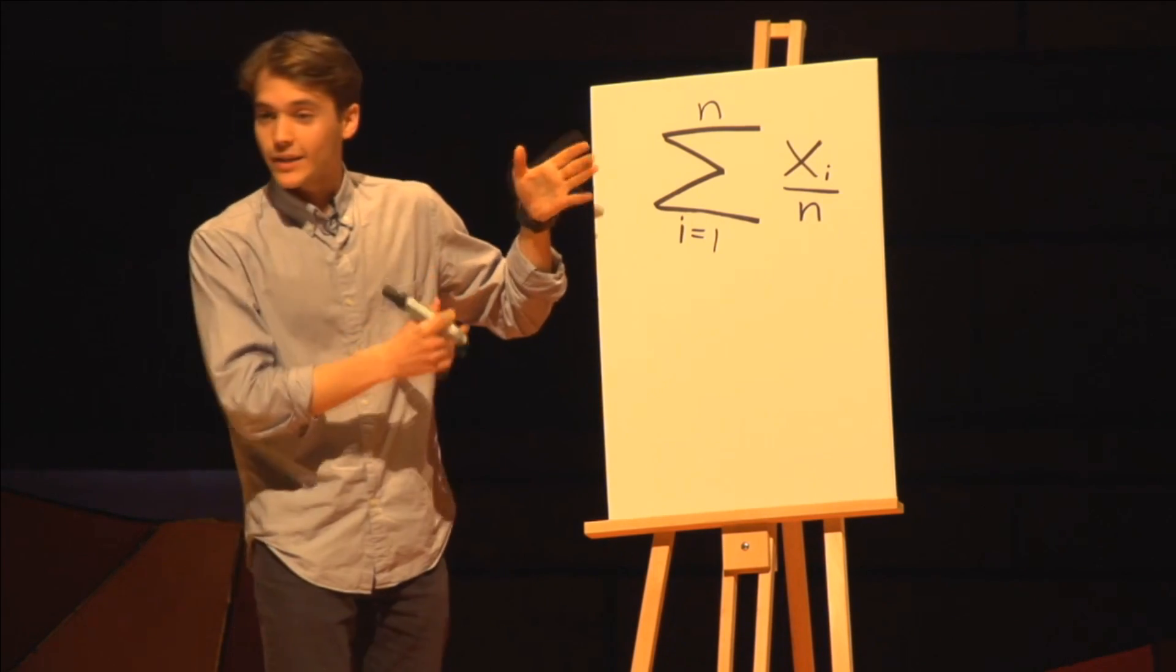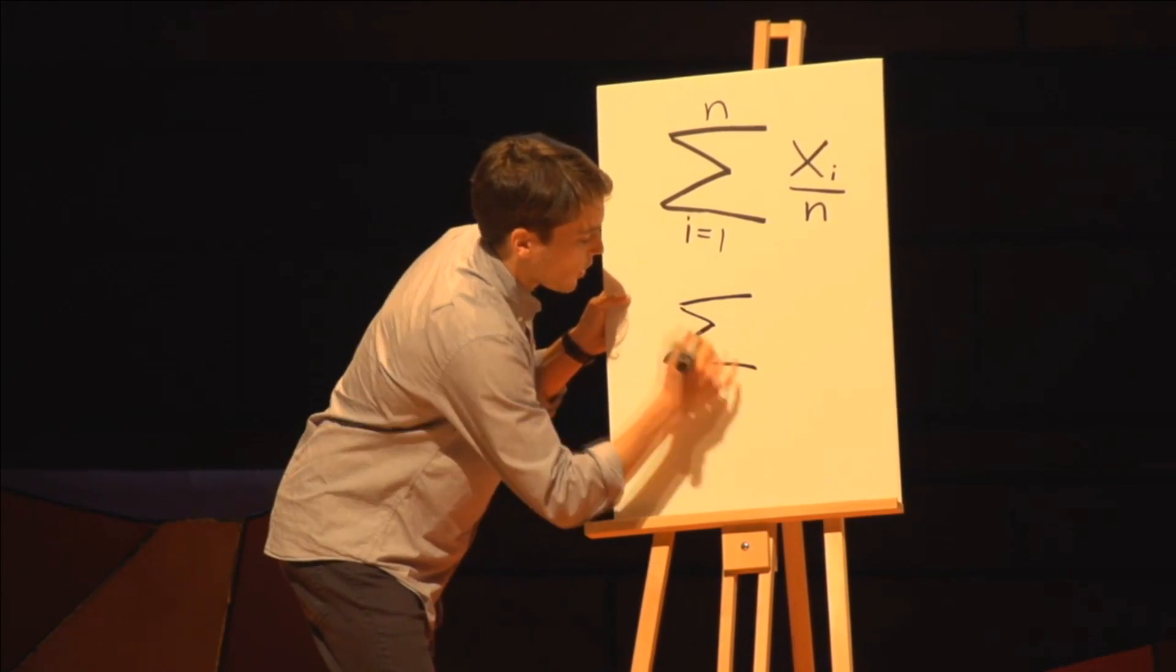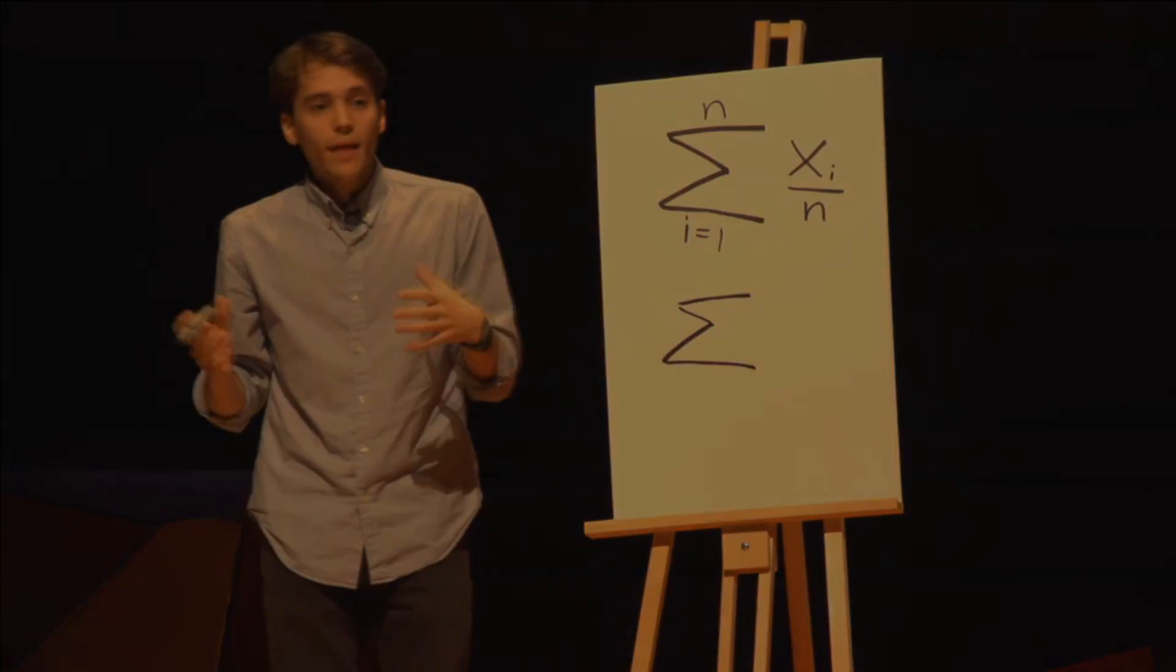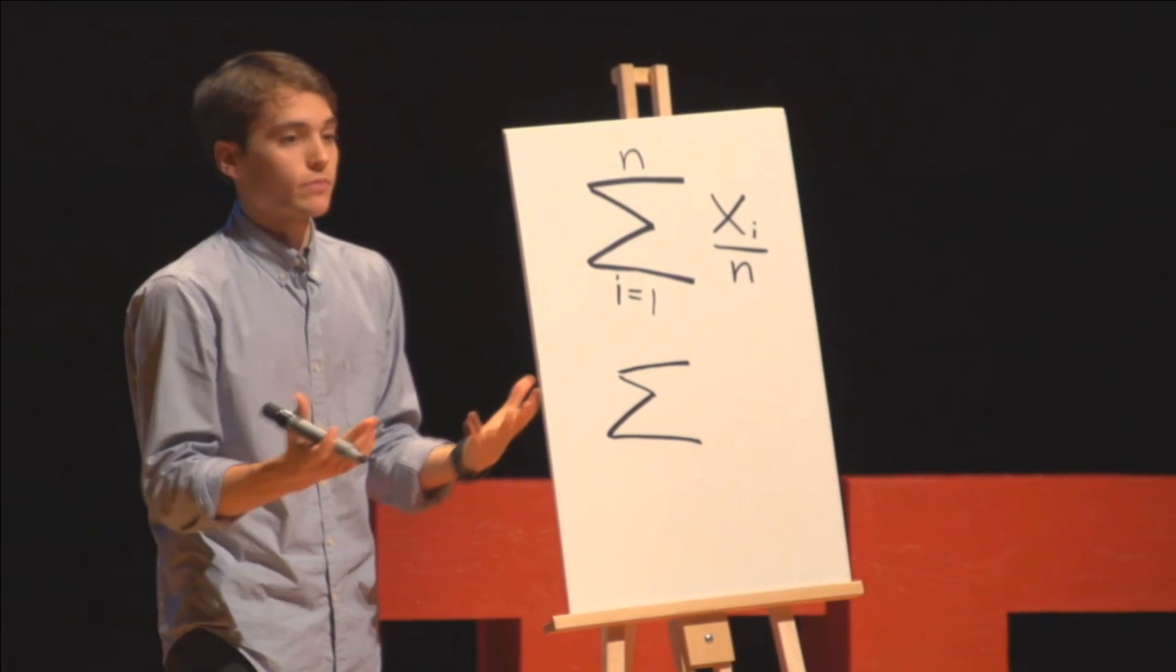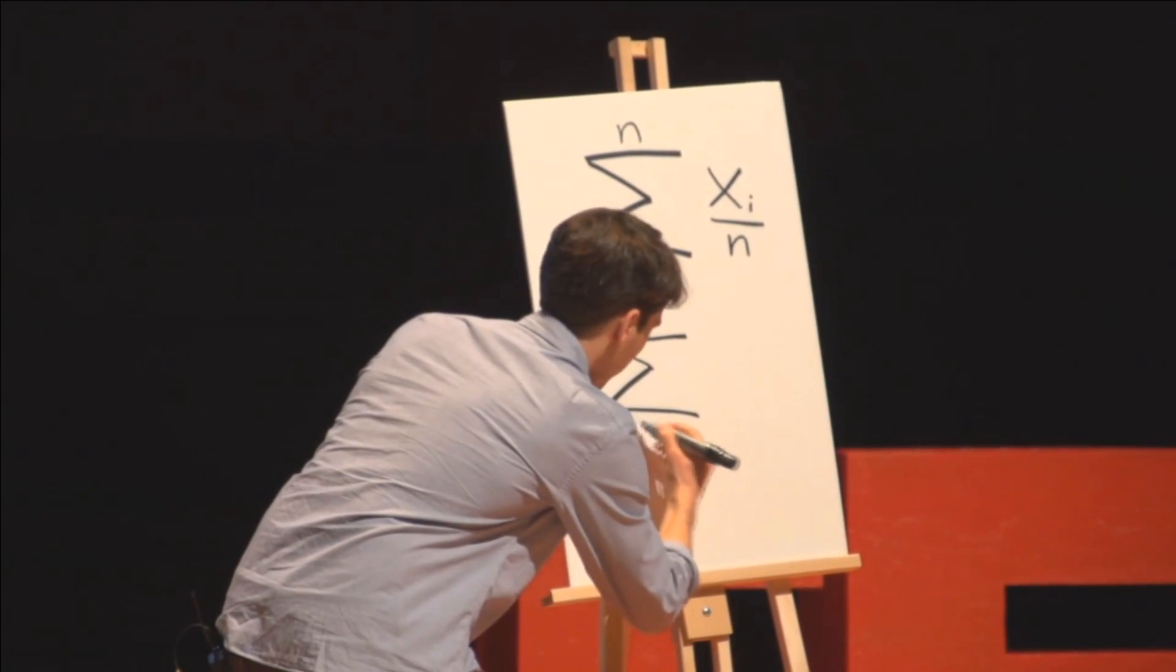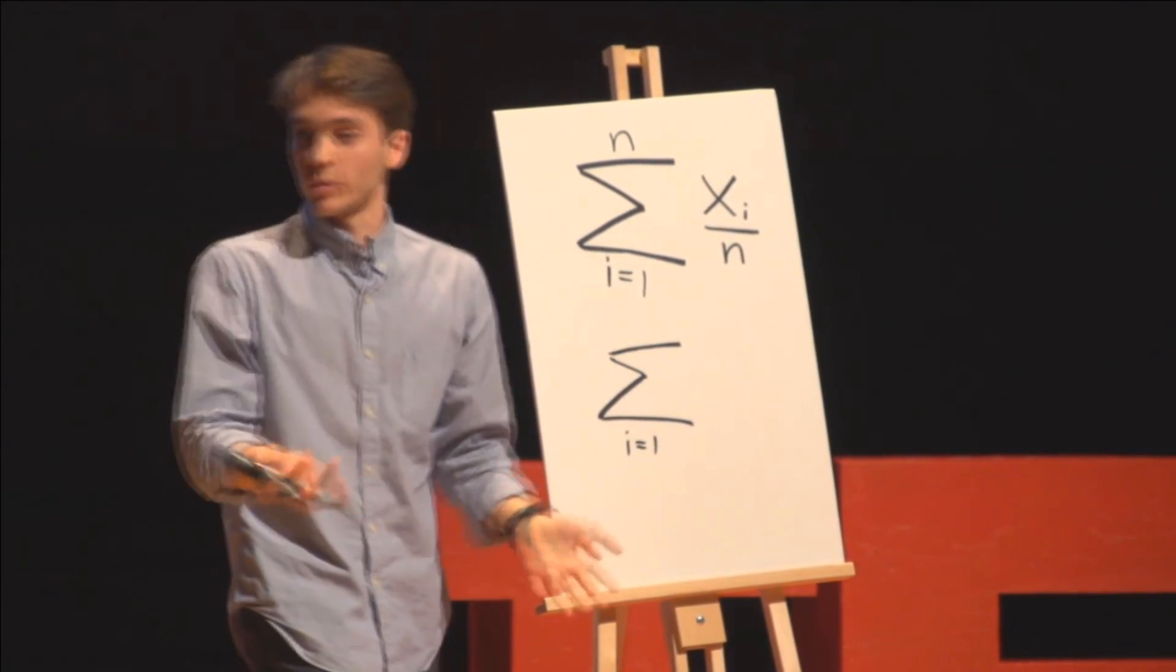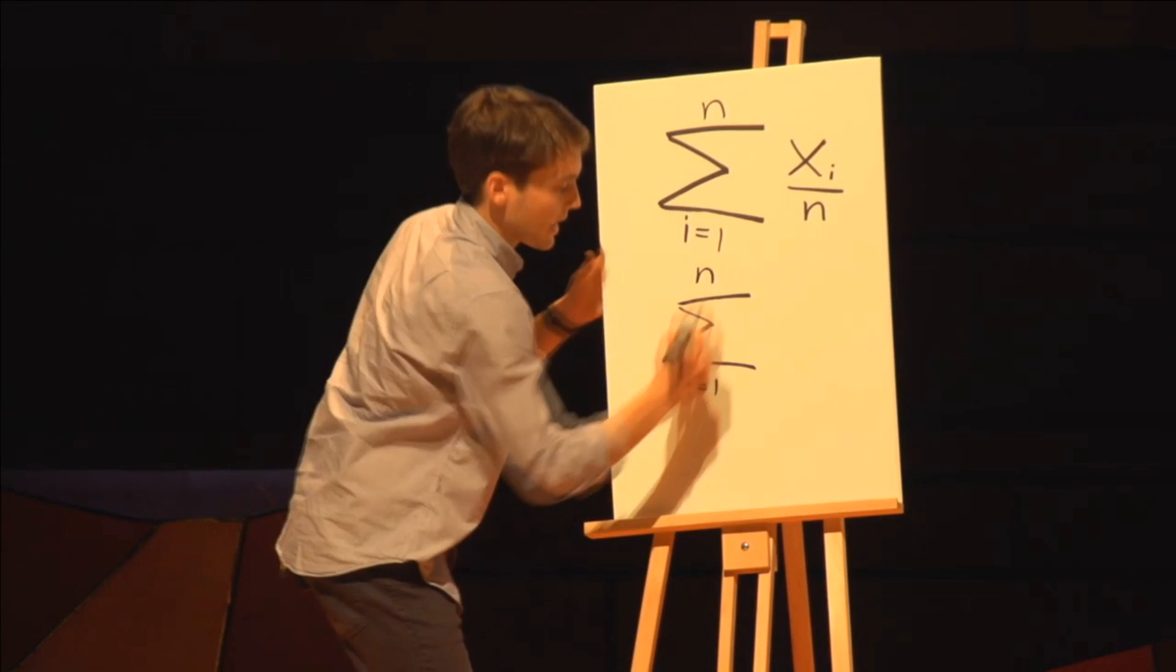We're going to start with this big guy here. This is the Greek letter sigma. We use what is called sigma notation in math to describe summation, or adding a sequence of numbers together. We start with the first number, which we write on the bottom, one. And we continue adding until we reach the last number, which we write on the top, in this case, n.